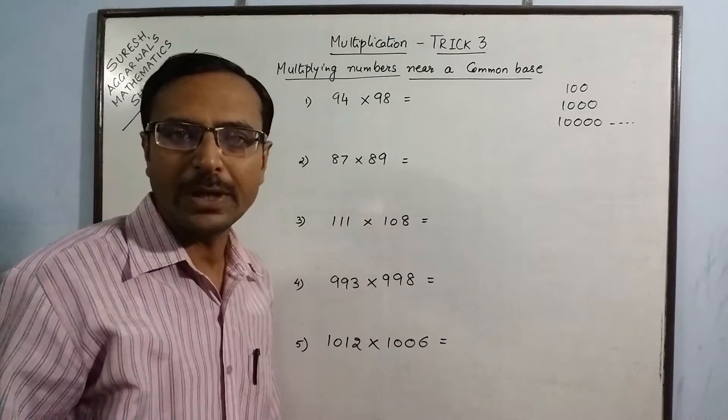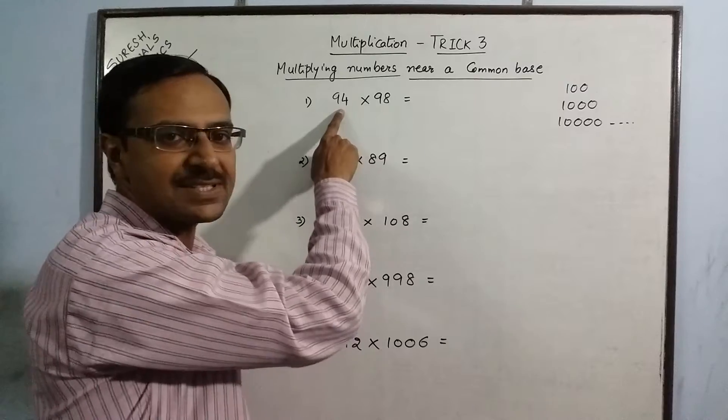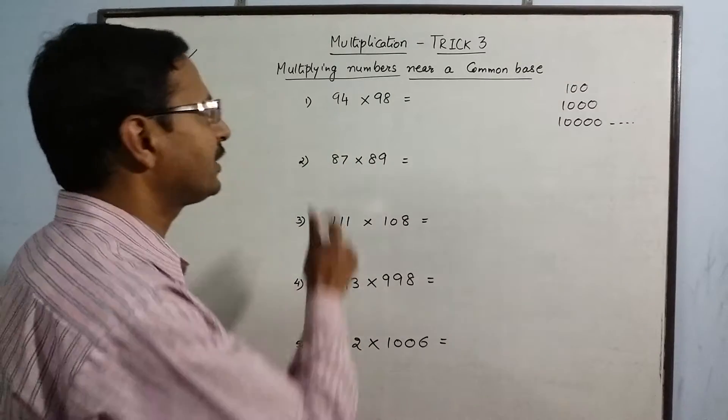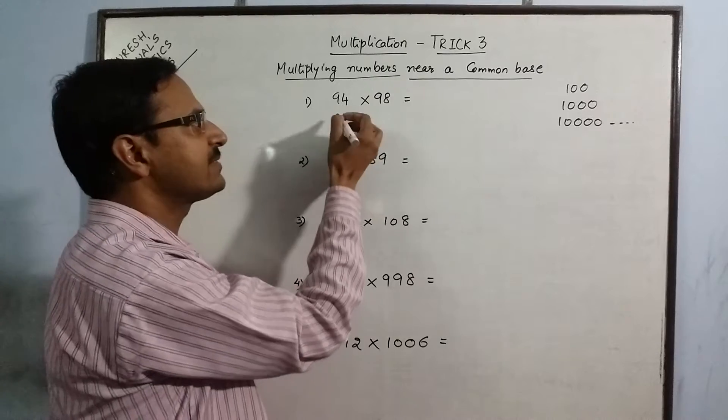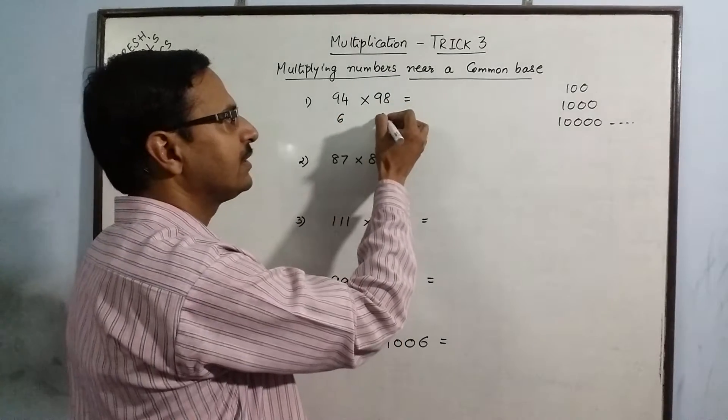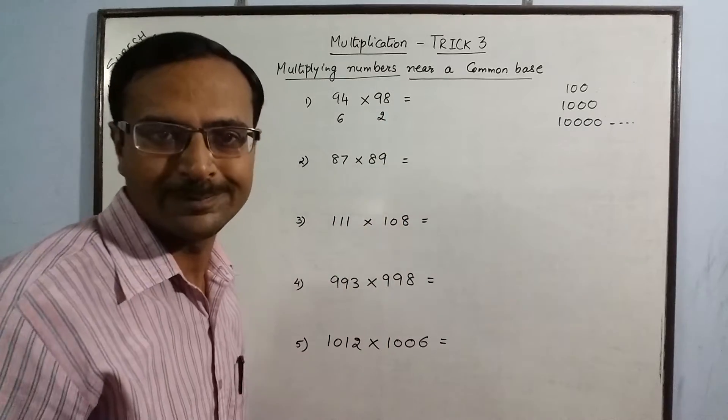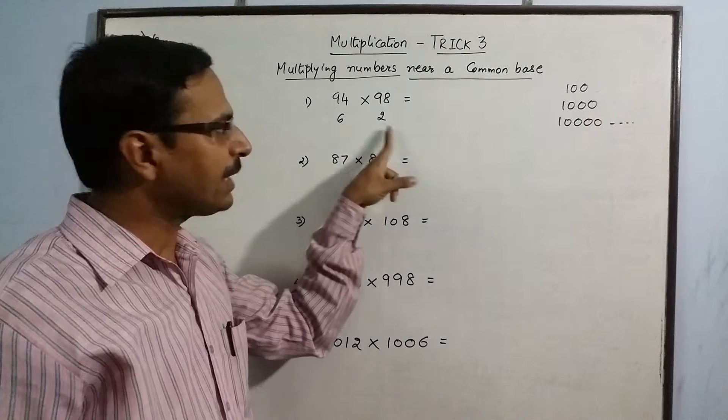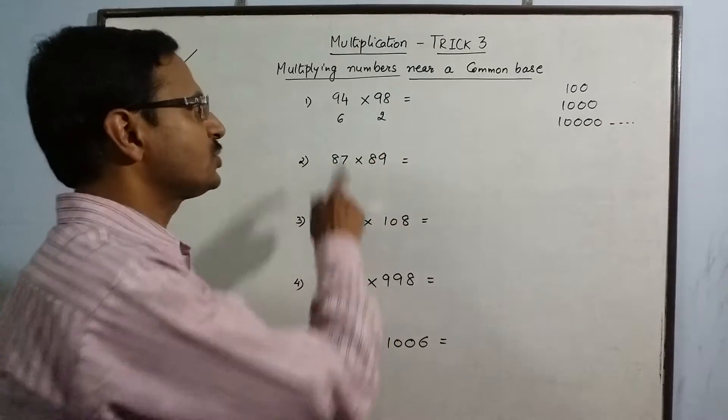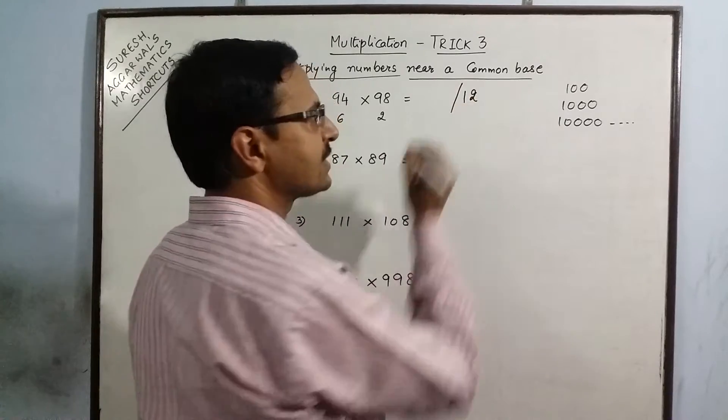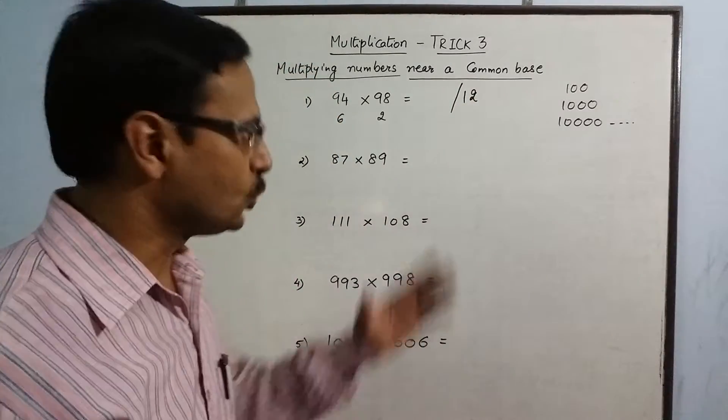The first step is to take the difference of this number from the common base 100. So, 100 minus 94 gives us 6, 100 minus 98 gives us 2. These two differences are to be multiplied, 6 into 2, this will give us the one part of the answer, 12.